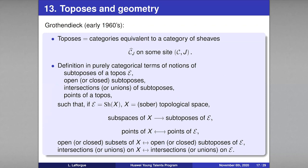Coming back to toposes: a miracle of category theory is that it is possible to define, in purely categorical terms, the notions of sub-topos, open or closed sub-topos, intersection, union, and point of a topos. All these words are borrowed from geometry, but they can be defined in purely combinatorial terms — in such a way that geometric and categorical notions coincide. The points of a topological space correspond to the points of the associated topos of sheaves on it.